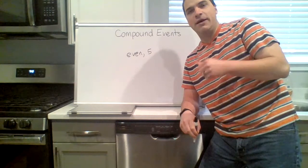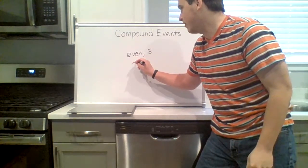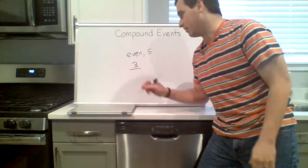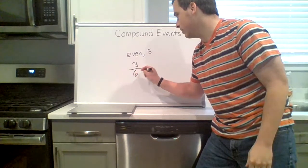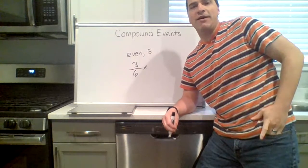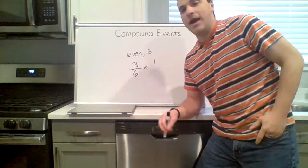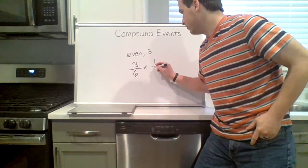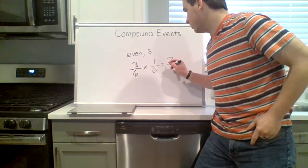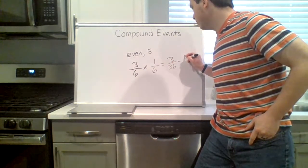How many numbers are even? Well, two, four, and six. The probability of an even number to start is three. How many total outcomes are there? Six. Okay, multiply by the probability of a five. How many fives are on a die? One. How many total numbers? Six.